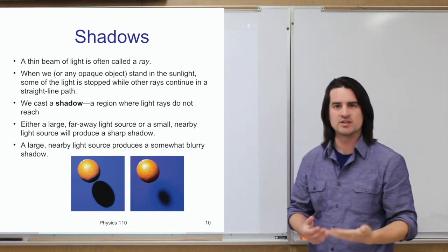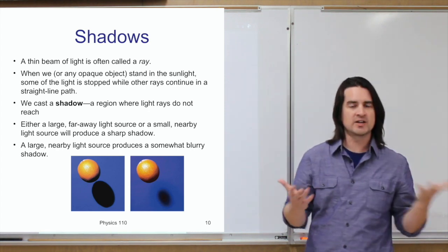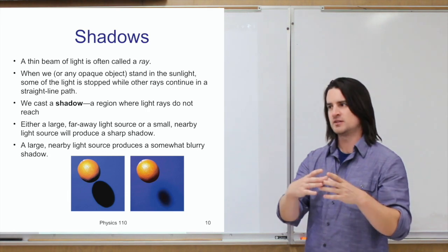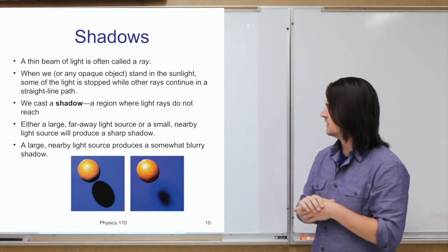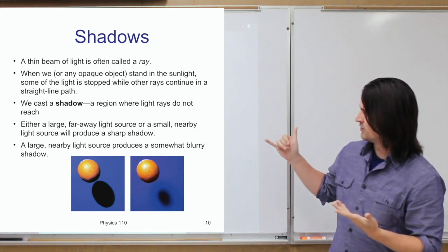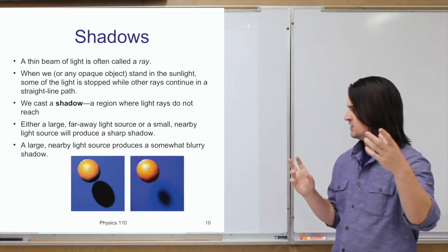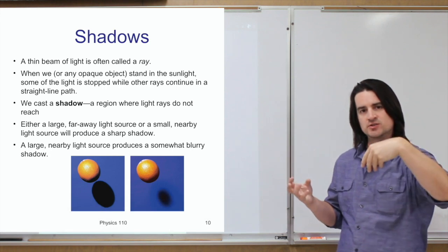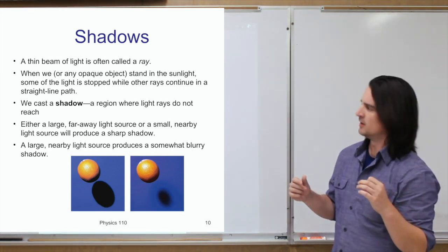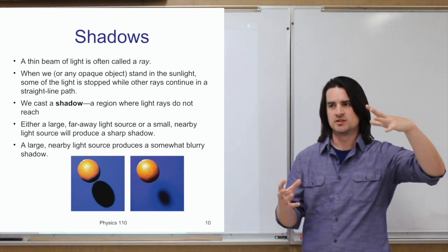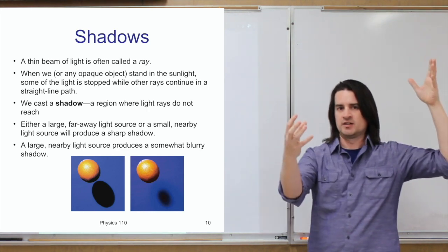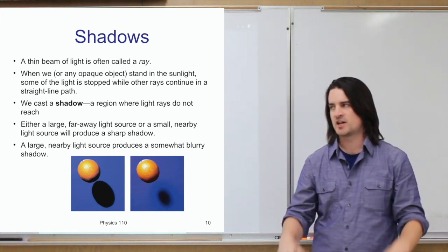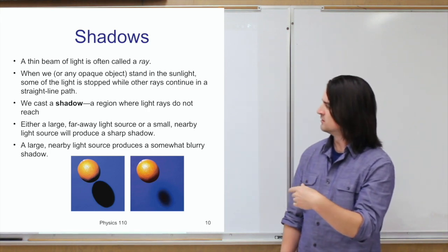The kind of shadow cast — whether it has a very sharp edge or a fuzzy edge — depends on a couple of things. It depends on whether the light source is very large and far away, like the sun, or small and close, like a desk lamp. If you have a large light source very close to an object, like a floodlight, you won't really see much of a shadow at all. Imagining light as rays helps us analyze why that is the case.